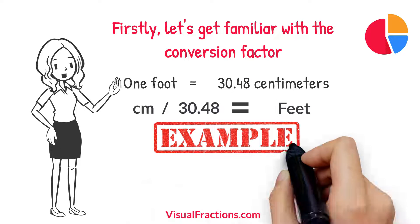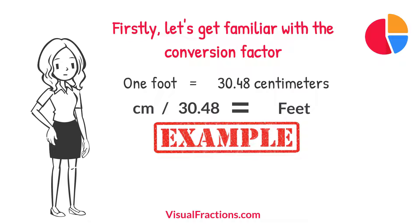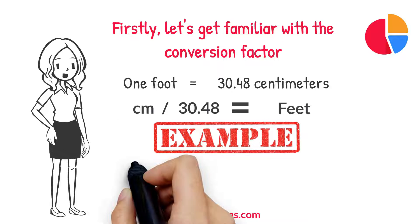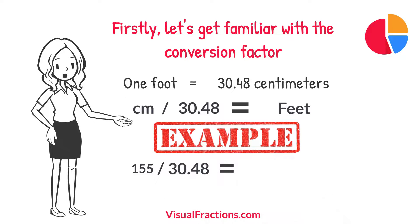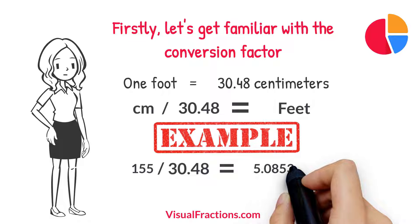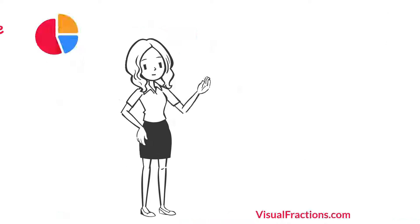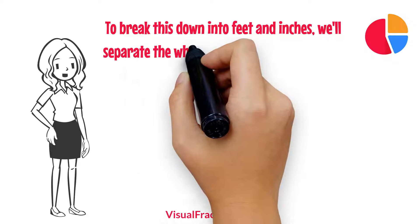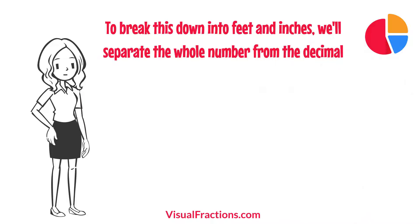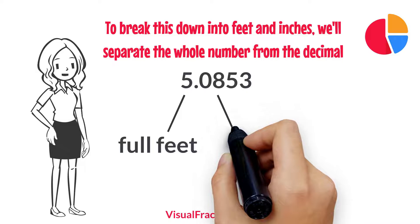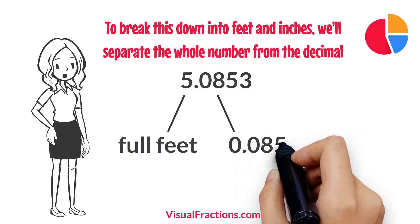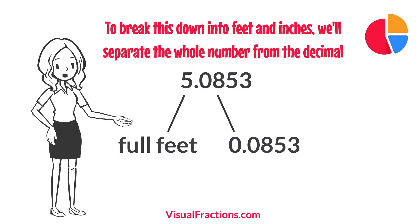Now, let's dive into an example. Suppose we want to convert a length of 155 centimeters to feet. We begin by dividing 155 by the conversion factor of 30.48. The result is approximately 5.0853 feet. To break this down into feet and inches, we'll separate the whole number from the decimal. The number 5 signifies the full feet, while the remaining decimal, 0.0853, indicates a fraction of a foot.